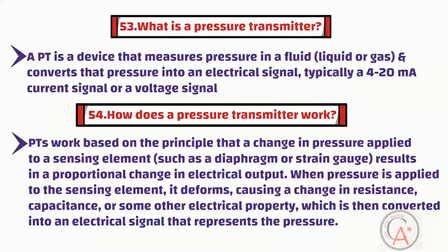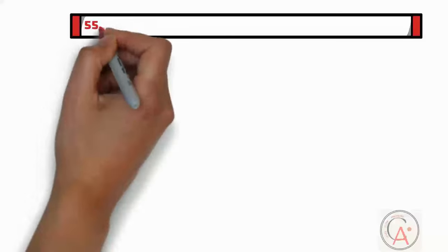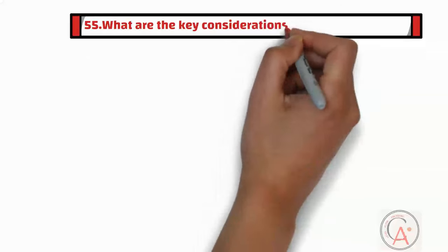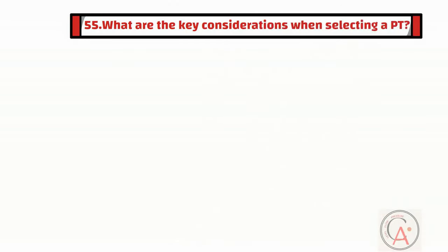Question fifty-five is: what are the key considerations when selecting a pressure transmitter? When selecting a pressure transmitter, it is essential to consider several factors including pressure range, compatibility, output signal, and environmental conditions.